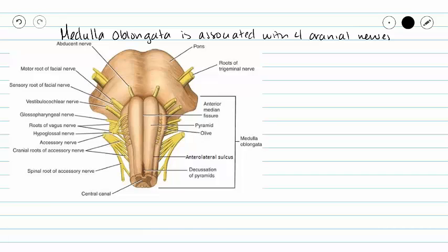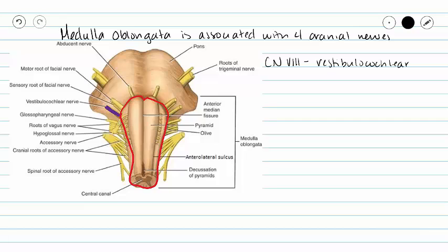The medulla oblongata is associated with four cranial nerves. Our medulla comes up to the crease right below the pons and includes this entire section highlighted in red. Our first cranial nerve associated with the medulla oblongata is cranial nerve eight, the vestibulocochlear nerve. Because of this, our medulla oblongata has some function in hearing and equilibrium. Our medulla oblongata is also associated with our glossopharyngeal cranial nerve, which is number nine.